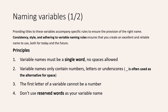There are some certain rules and principles to naming variables. Overall, we can say that consistency, style, and adhering to variable naming rules ensures that you can create excellent and reliable variable names — useful for today and the future, for yourself and also for other people. Principles: first of all, a variable name must be a single word — no spaces allowed. So always when you have a space, just use an underscore.